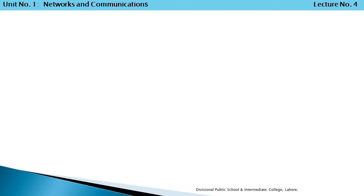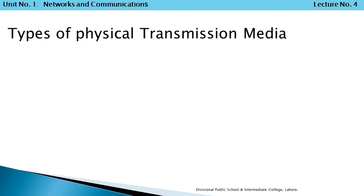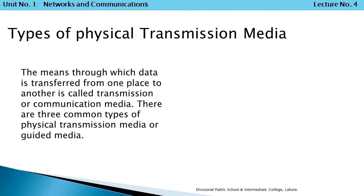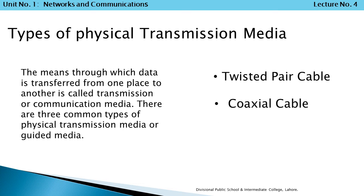Guided Media is also called Physical Transmission Media. There are three common types of Physical Transmission Media: number 1, Twisted Pair Cable; number 2, Coaxial Cable; number 3, Fiber Optic Cable. Each transmission media has its own advantages and disadvantages in terms of bandwidth, speed, delay, cost per bit, ease of installation and maintenance, etc.